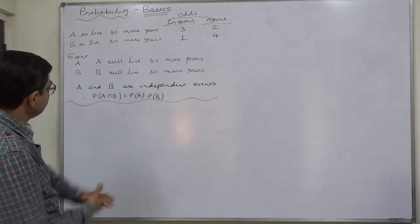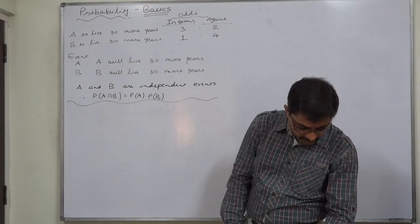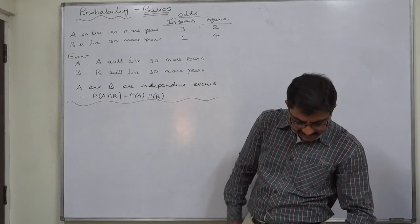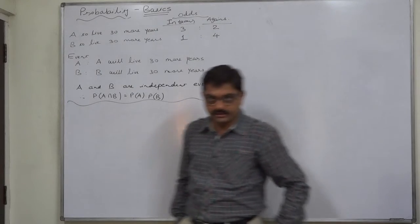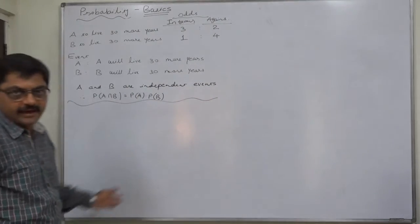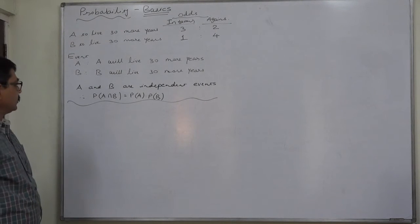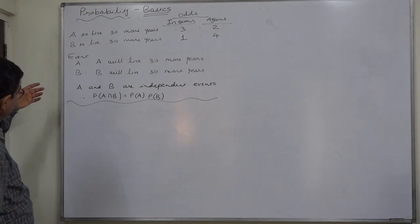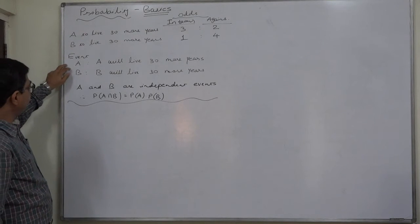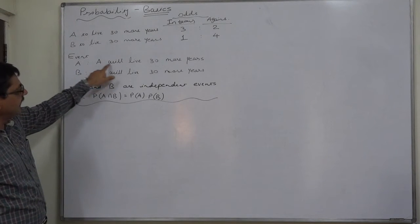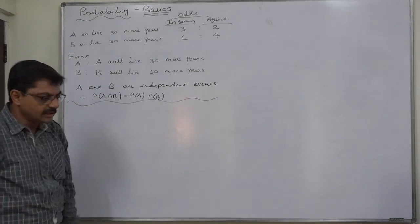Now, this is the scenario. We are interested in finding the probability that at least one of them will be alive after 30 years — at least one out of A and B. There are two persons A and B. Let us use event A to indicate A will live 30 more years, and event B to indicate B will live 30 more years.